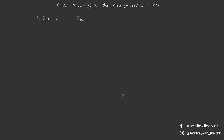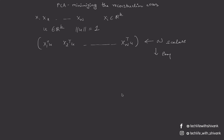PCA can also be looked at as minimizing the reconstruction error. Assume we have n data points x1, x2 to xn, where each xi belongs to R^k. We have to find a vector u belonging to R^k such that the magnitude of u is 1. We project xi onto u to get n scalars, and then project these scalars back into k-dimensional space, where they represent the length in the direction of vector u.